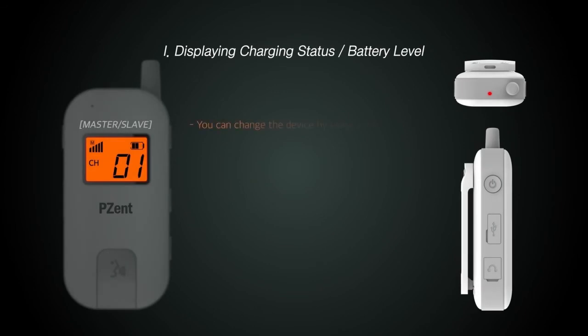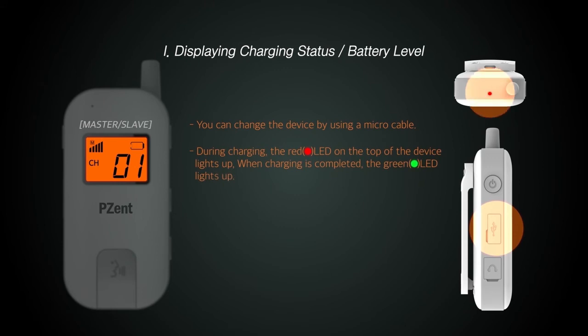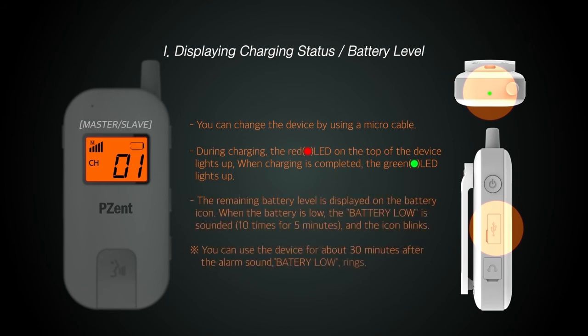LED and LCD display the charge status and remaining battery level. When the LED on the top of the product is green, it indicates the charge is completed, and when it is red, it indicates that it is charging. The LCD displays the remaining battery, and the battery-low alarm sound is activated when there is about 30 minutes of battery remaining.